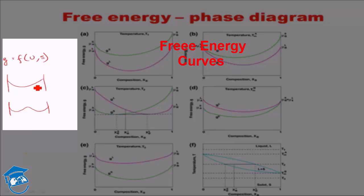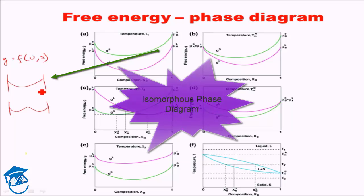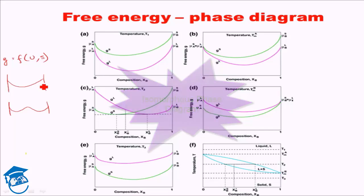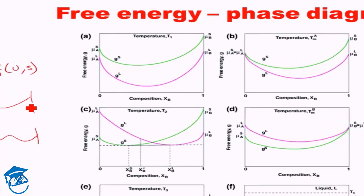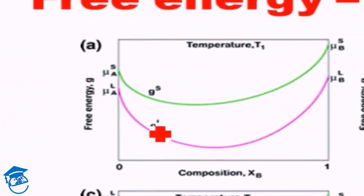Now let's see how we create an isomorphous phase diagram. We'll take a snapshot of the free energy of all possible phases at different temperatures. For this case, we have represented five temperatures here. We start from the highest temperature T1. At T1, we draw the free energy curve for the solid phase and the liquid phase.